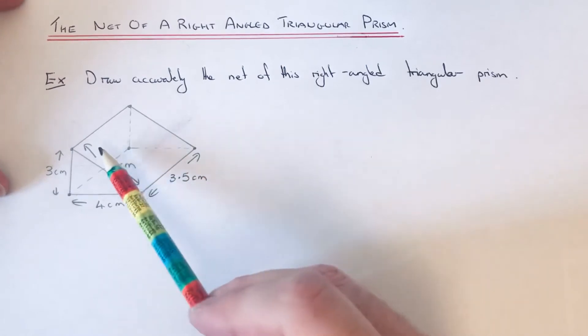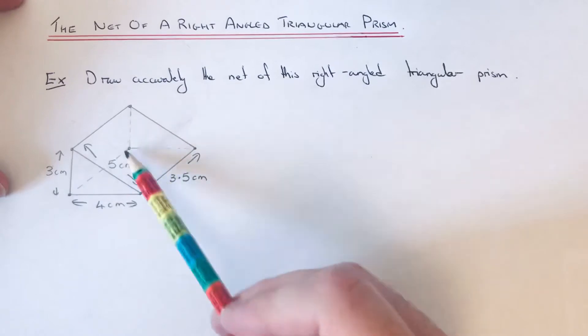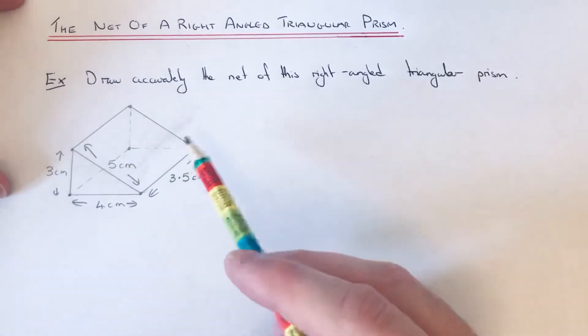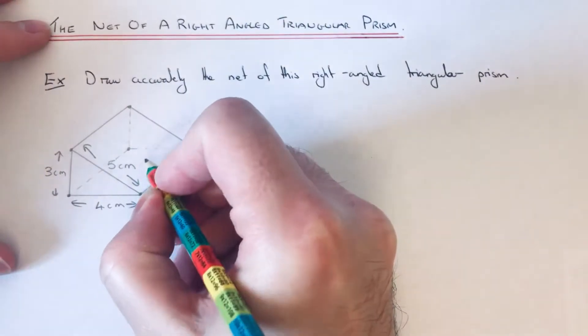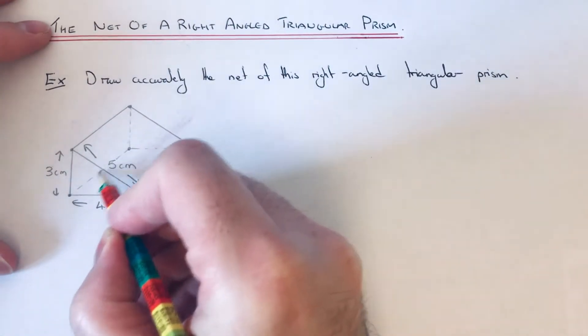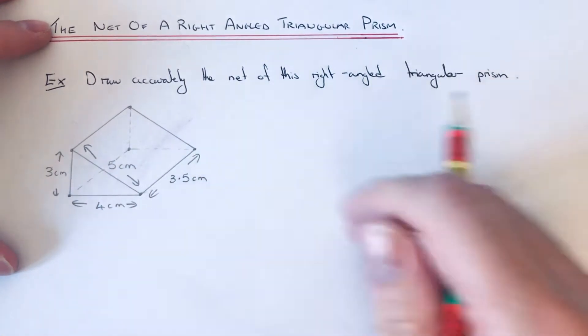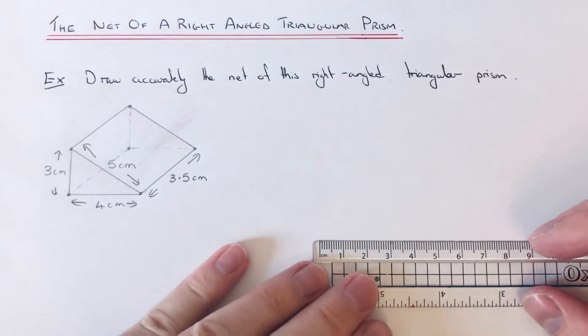up of three rectangular faces and two triangular faces. Okay, so to draw the net, we're going to start off with the bottom face which is a rectangle. So we're going to draw a 4 by 3.5 rectangle.